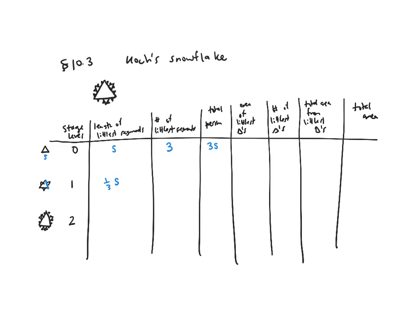The number of little segments at stage one is going to be 12, which is three times four. So the total perimeter will be one third s times three times four, because it's the number of little segments times the length of the littlest segments. At the next stage, I've got teeny tiny little segments, and each one of the segments is a third as big as the previous segment. So it's going to be one third of one third s, or one third squared times s.